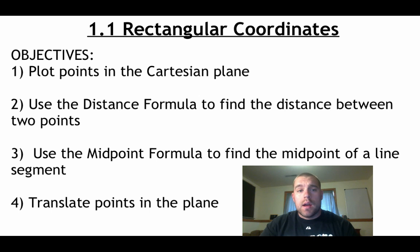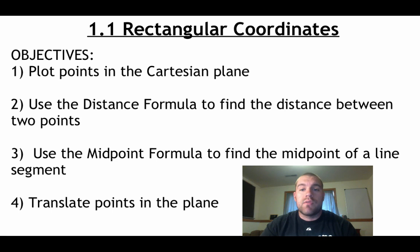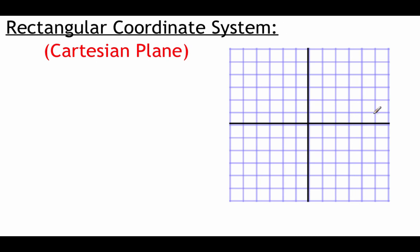Hey guys, Mr. Bakkeberg here. Lesson 1.1 is all about rectangular coordinates. You can see I've got four objectives listed. First, we're going to plot points on our Cartesian plane — that's our normal x and y plane. Number two, we'll use the distance formula to find the distance between points. Three, we'll use the midpoint formula to find the midpoint of a line segment. And four, we're going to translate some points in the plane, which just means moving those points around. So let's jump right in.